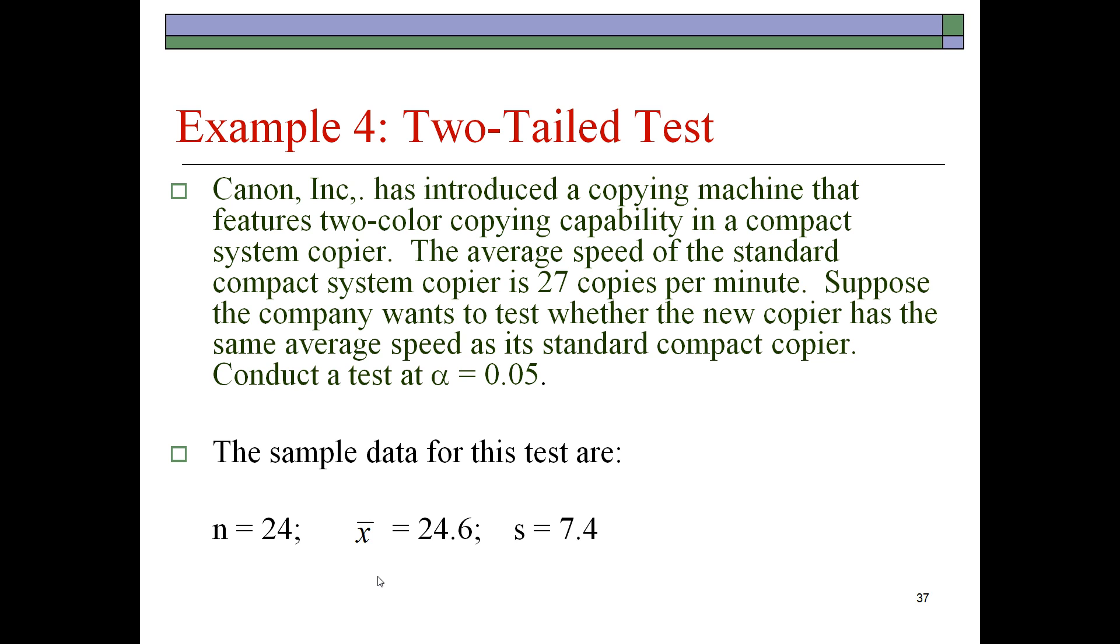Suppose the company wants to test whether the new copier has the same average speed as its standard compact copier. For this, we're going to conduct our test at the 5% level. From this data, we find that only 24 observations are used. That's pretty small.